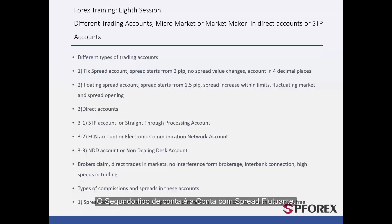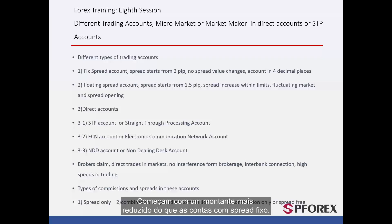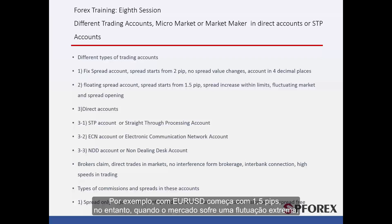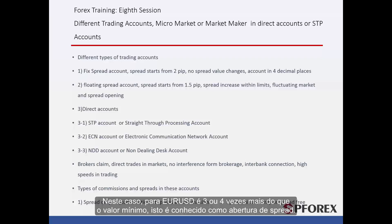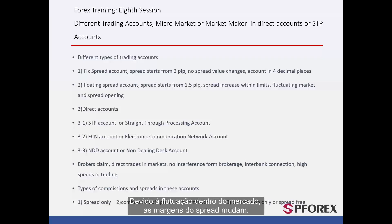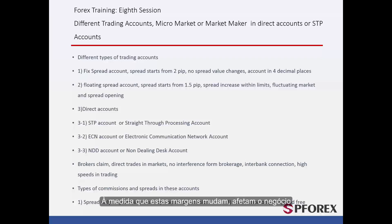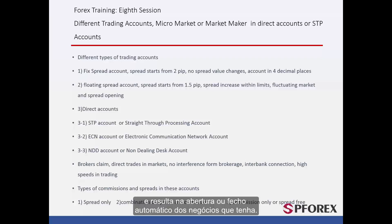The second type of trading account is a floating spread account. They start with a smaller amount than fixed spread accounts — on Euro against US Dollar it starts from 1.5 pips. However, when the market is experiencing extreme fluctuation, spread rises to a considerably higher amount; for Euro against US Dollar it can be 3 or 4 times more than its minimum value. This is known as spread widening. These accounts are usually in a 5-digit format. Due to fluctuations within the market, the spread margin changes, which directly affects your orders and may result in the automatic opening or closing of any orders you have.